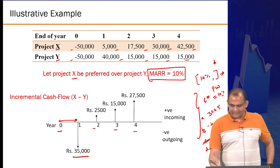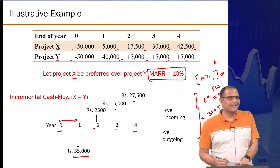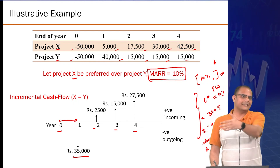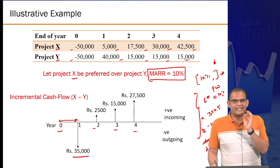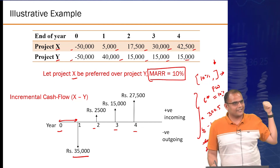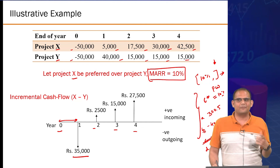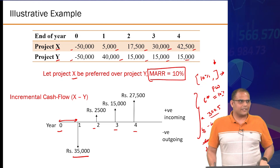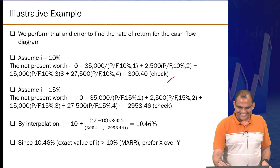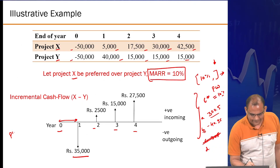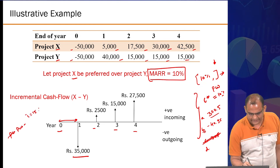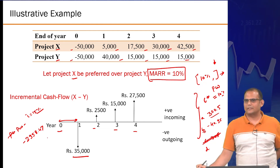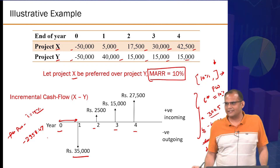A value of 300.5 will not create a major blunder in this case because at least your direction of the next increment is consistent — you know the value is high, so you need to increase I to reach the target. If you had started with minus 40, you'd move in the opposite direction and require more calculation steps. The correct answer is 300.4. Now assume 15 percent — the present worth of the same series at I equals 15 percent comes out to approximately minus 2,958.47.